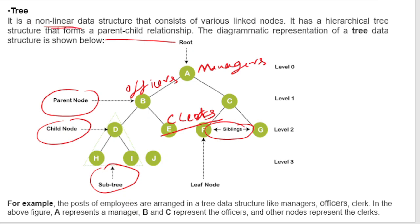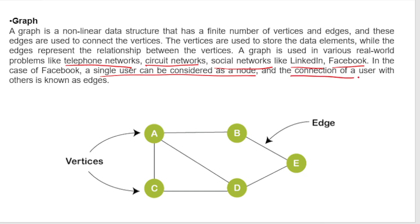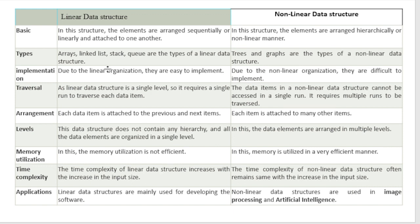Graph is a non-linear data structure that has a finite number of vertices and edges, where edges are connected to the vertices. Vertices are used to store the data elements while edges represent the relationship between vertices. Graphs are used in various real-world problems like telephone networks, circuit networks, and social networks like LinkedIn and Facebook. In Facebook, a single user can be considered a node and the connection with another user is known as an edge.